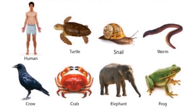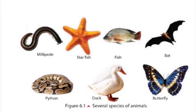Observe the set of animals I have given you: human, turtle, snail, worm, crow, crab, elephant, frog, milk pet, starfish, fish, bat, python, duck, and butterfly. These are several species of animals. They are grouped in order to make it easy for naming, identification, and study. Considering mode of locomotion, bat, butterfly, and crow can be grouped as flying animals, but these animals display huge diversity with regard to other features.